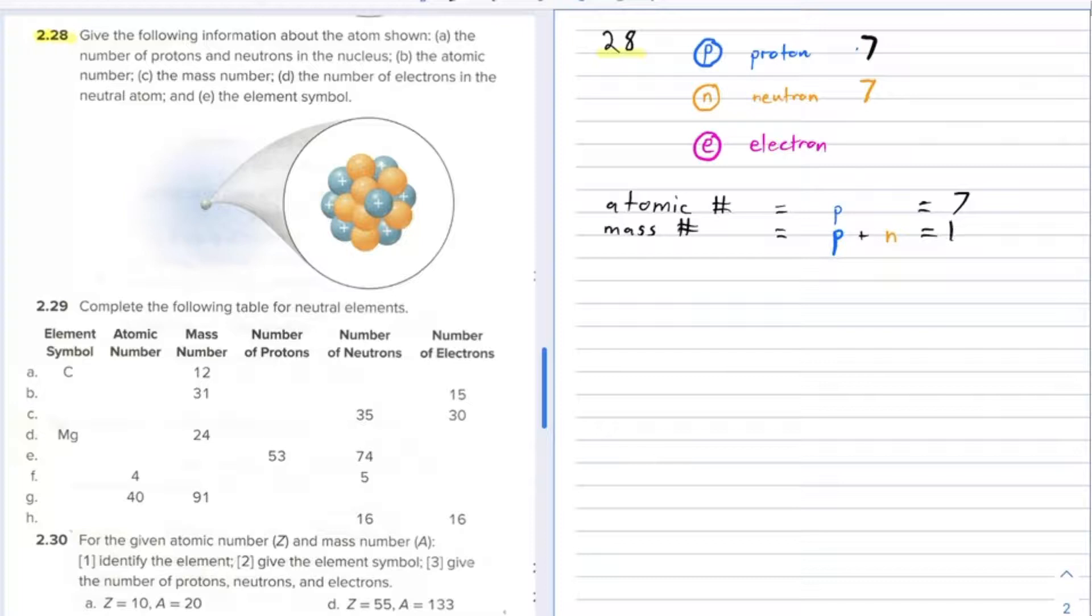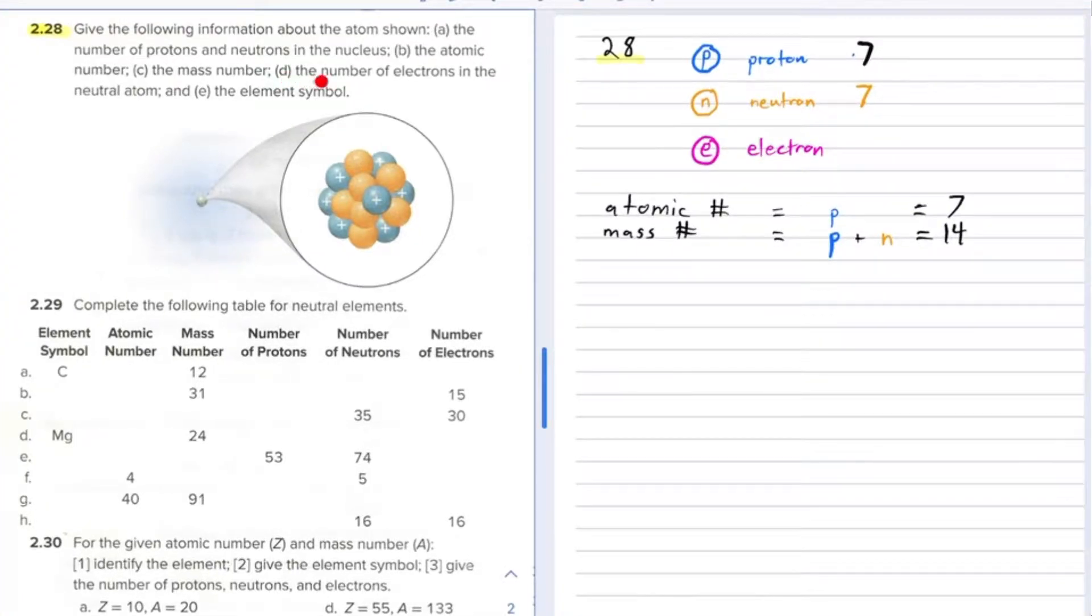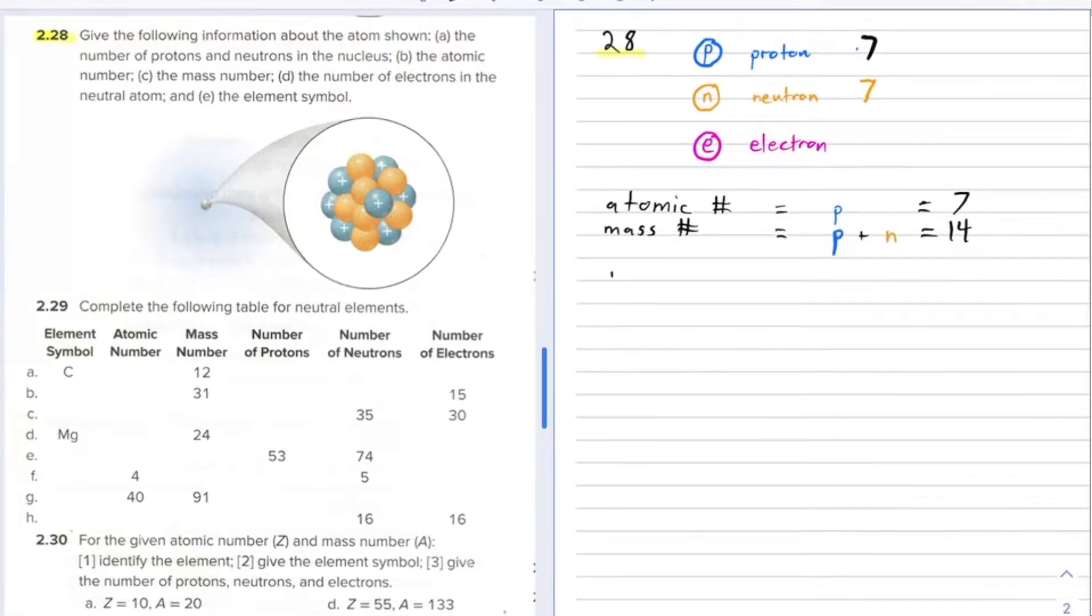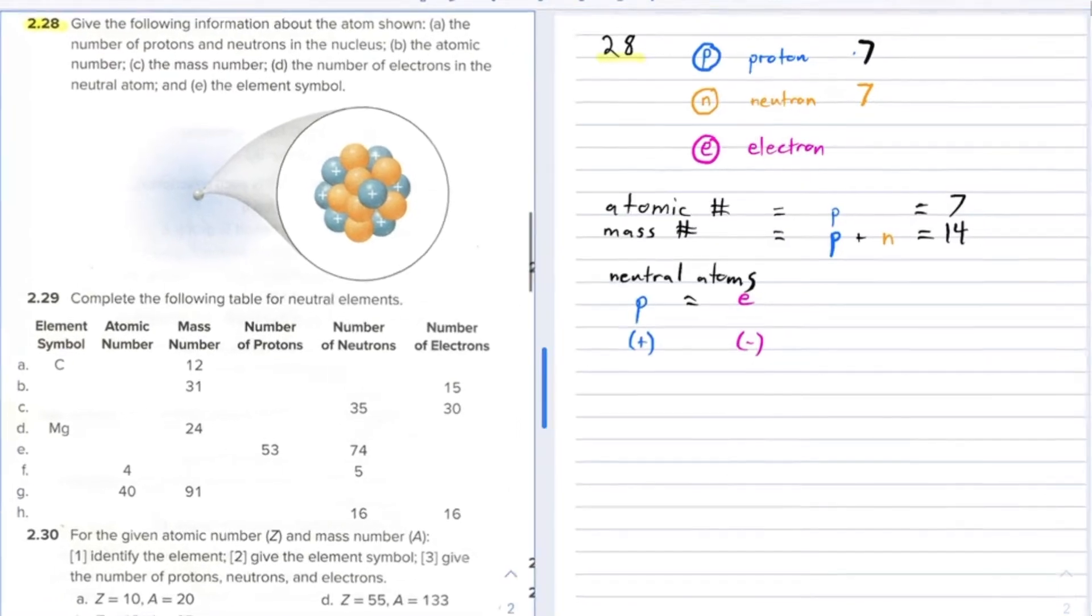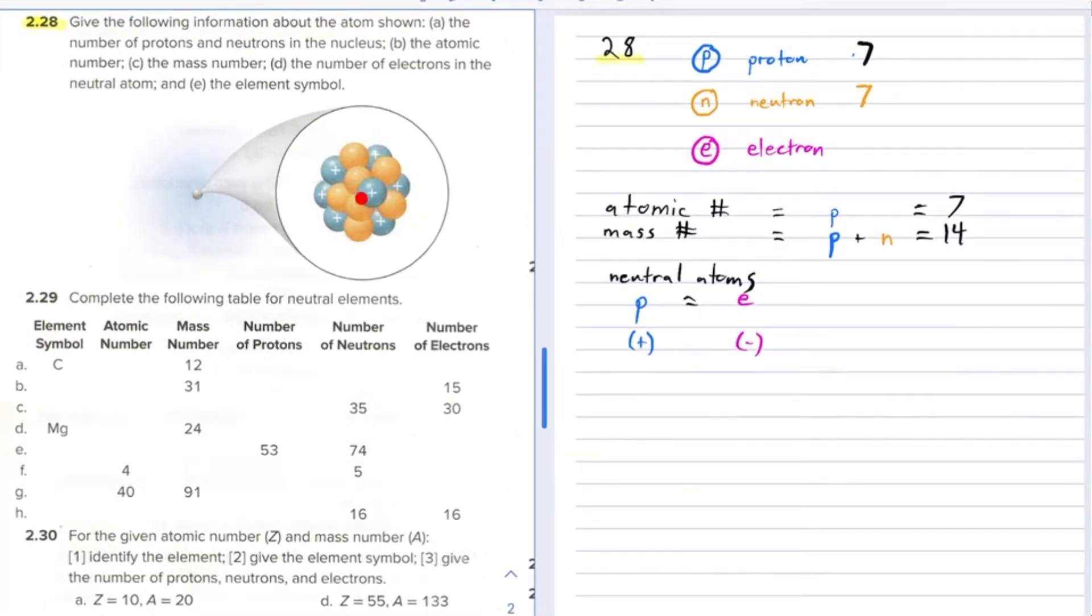Part D, the number of electrons in the neutral atom. For neutral atoms, the number of positive protons equals the number of negative electrons. If this is a neutral atom, which is shown here, you see seven positive protons.